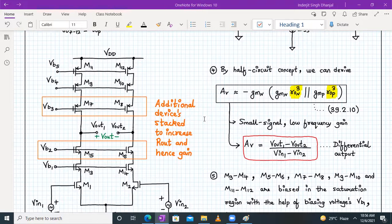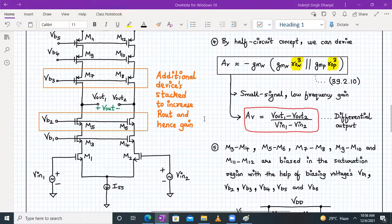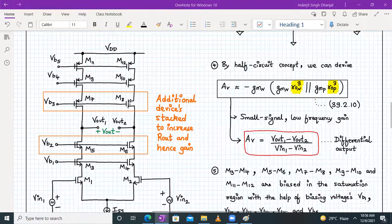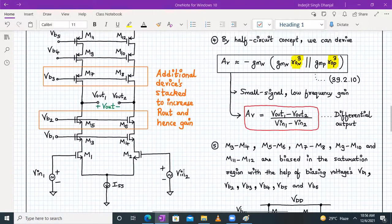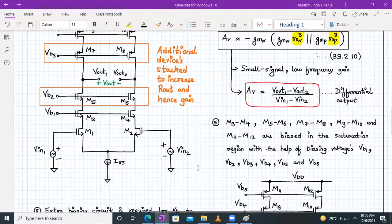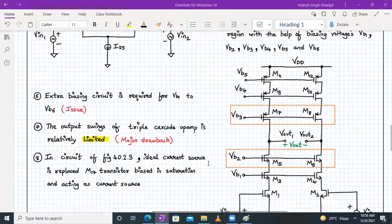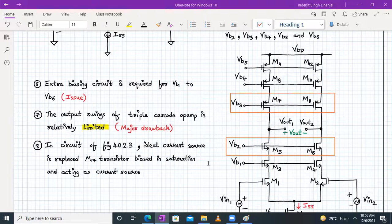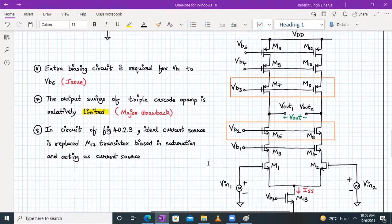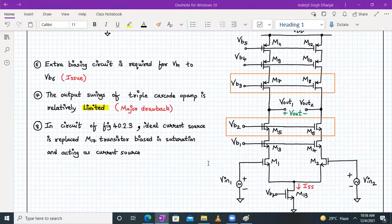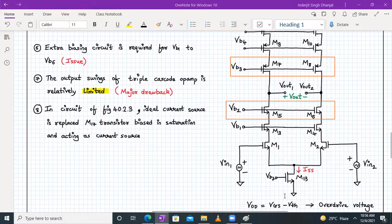As you can see, the gain has increased to tremendously higher value, but the problem is it will reduce the output voltage swing further. This is the differential voltage gain. M3, M4, M5, M6, M7, M8, M9, M10, M11 and M12 are biased with external biasing supplies VB1, VB2, VB3, VB4, VB5. Extra circuit is required. The output voltage swing of triple cascode is very much limited. That's the major drawback. We can replace the ideal current source with M13 transistor, an NMOS transistor that will provide constant current provided it's working in saturation.